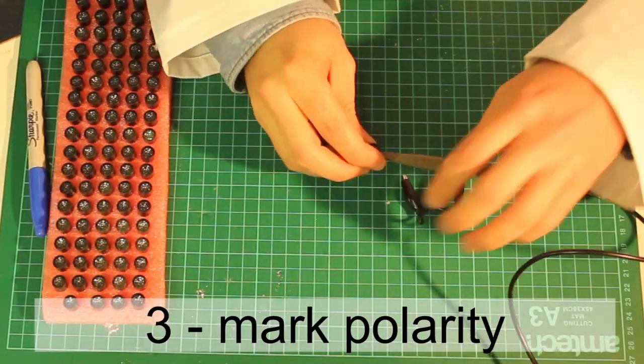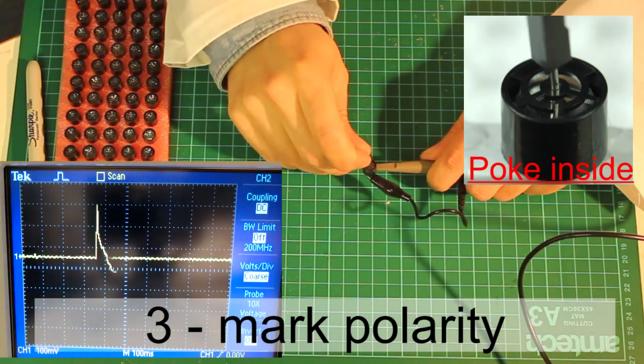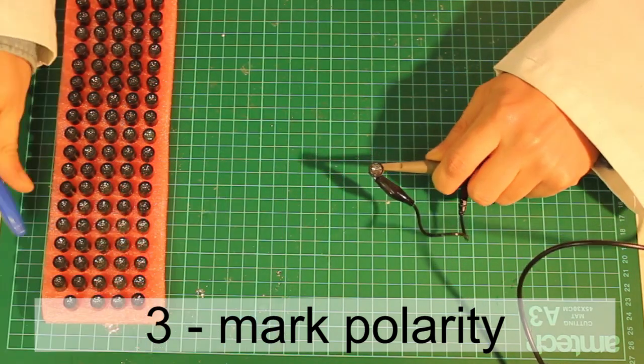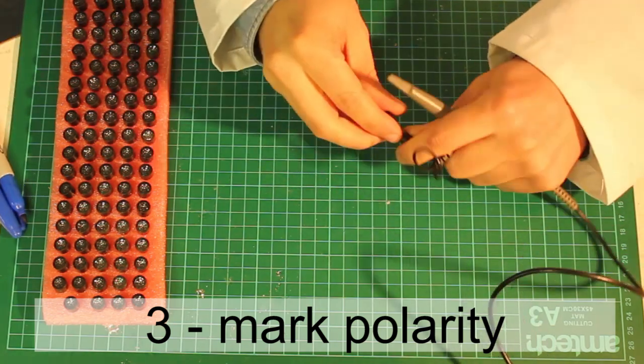Now we need to mark the polarity of the transducers. For doing so, attach one to the scope and poke it with a thin wire. If the spike goes up, mark the positive leg.